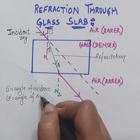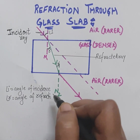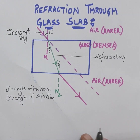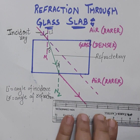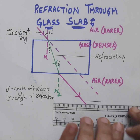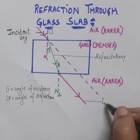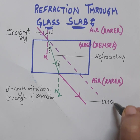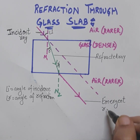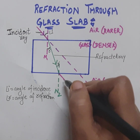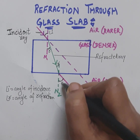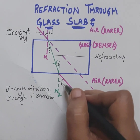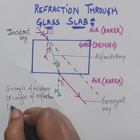The last ray that has finally emerged out from the glass slab is called the emergent ray, as it is emerging out from the glass slab. The angle between the emergent ray and normal number two is represented by e, and this angle e is called the angle of emergence.